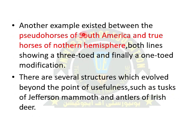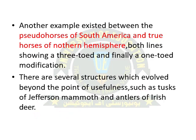Here is another example of orthogenesis. It exists between the pseudo-horse of South America and two horses of the Northern Hemisphere, both having three toes in their life history but developed finally into a single-toe modification. There are several structures which evolved beyond the point of usefulness, such as the tusks of Jefferson's mammoth and antlers of the Irish deer. Both animals used their tusks and antlers respectively in their life stages, and both organs were retained in their offspring.